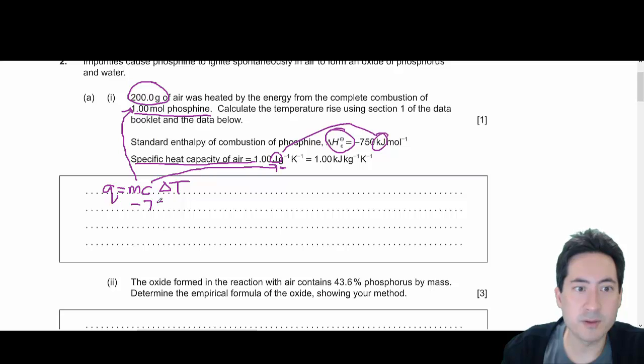I've got minus 750 kilojoules per mole. I haven't converted that yet. I'll have to do that. We've got 200 grams. We've got 1. And we've got our temperature change. So our temperature change is going to be this, 750,000, because I'm converting that to joules.